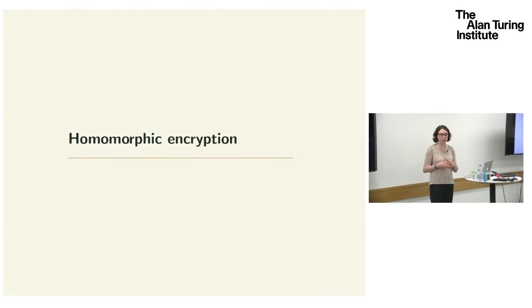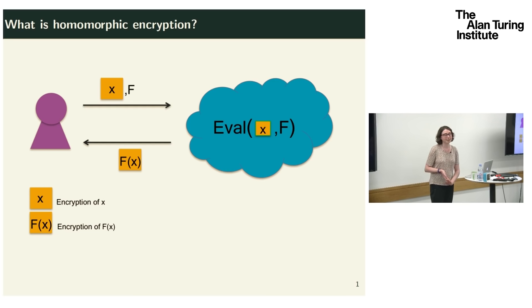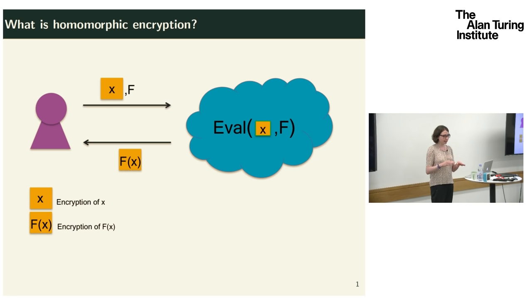Before we get started with security and encoding, let's introduce homomorphic encryption. Homomorphic encryption is this magical technology where you can operate on ciphertext in such a way as to operate meaningfully on the underlying plaintext, and you don't need to decrypt them in order to do this or otherwise give access to the secret key.